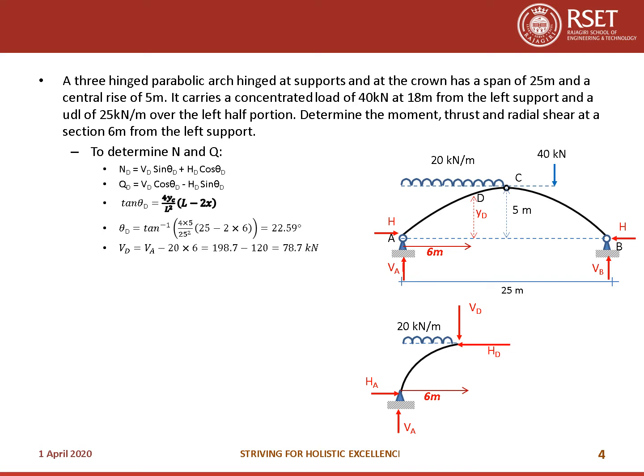VD from ΣFy = 0 of the left FBD: VD = VA − 20 × 6 = 198.7 − 120 = 78.7 kN. HD = HA = H = 184.24 kN (from ΣFx = 0). Substituting into the equations gives ND = 200.35 kN and QD = 1.885 kN.